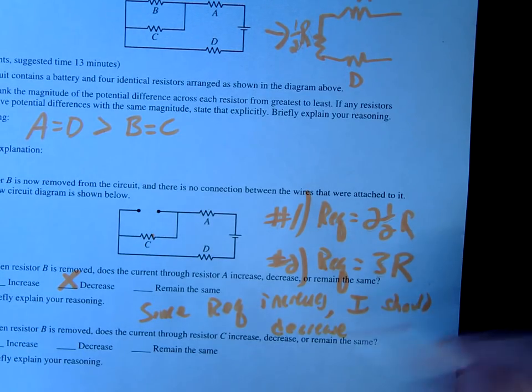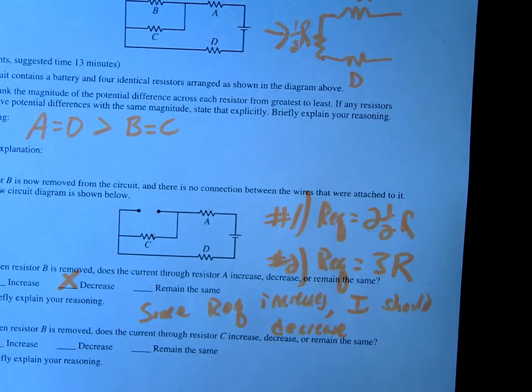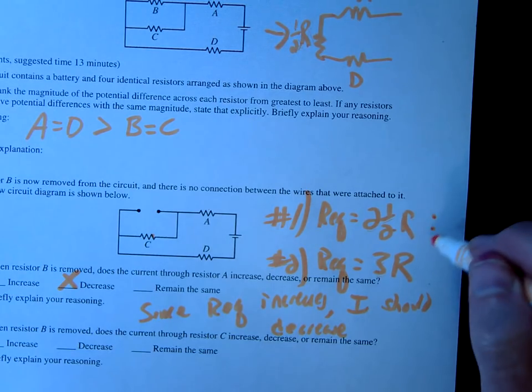And therefore, they're just asking for current. So I should, therefore, decrease in that case. And again, you could kind of maybe explain what's going on with the equivalent resistance.